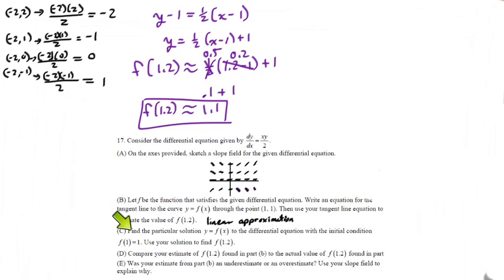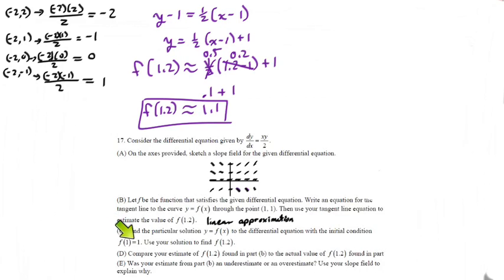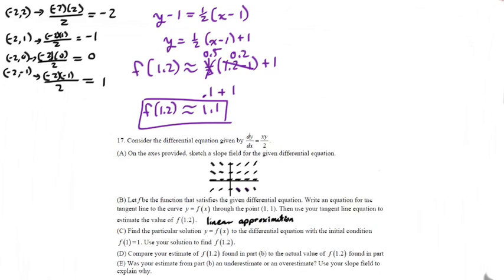Part C says find a particular solution to the differential equation with the initial condition F(1) = 1 — hey, that's the same point as 1, 1. Then use the solution to find the actual value of F(1.2). So here we got the estimated value, and here we're going to find the actual value. To do this we're going to take our differential equation and separate the variables.